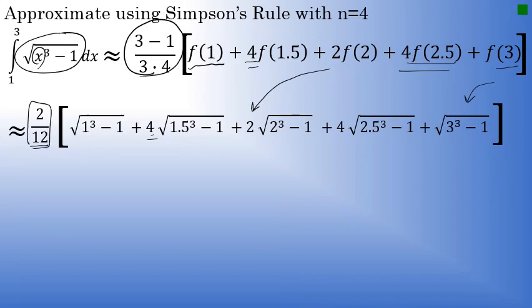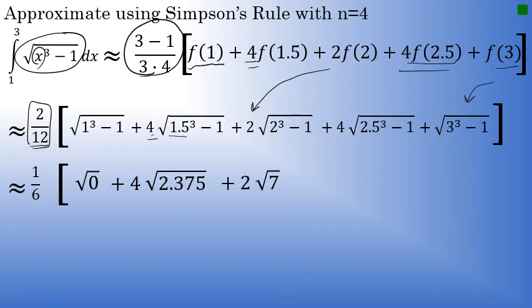2 twelfths in lowest terms is 1 sixth. And then the result of the square root of 1 to the third minus 1 will be the square root of 0. 1 to the third is 1 minus 1 is 0. Plus 4 times, 1.5 to the third minus 1 is 2.375. The third term, 2 to the third minus 1 is 7. Plus 4 times the square root of 14.625. Plus the square root of 26. 3 to the third is 27 minus 1 is 26.